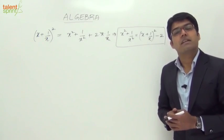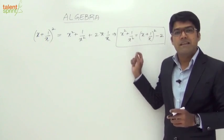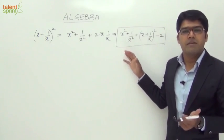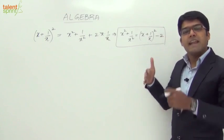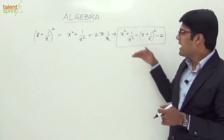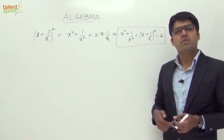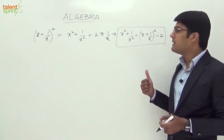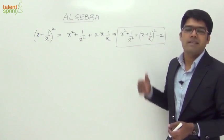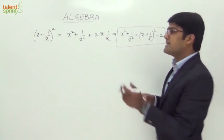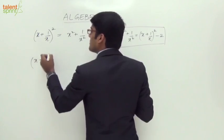This is one of the important results we need to remember, apart from the algebraic identities we have already covered, so that we can solve some questions really fast. If you remember, this was used in one of the earlier questions — x² + 1/x² was required, so we used (x + 1/x)² minus 2. Now we can simply remember this result. Likewise, let's look at (x - 1/x)².